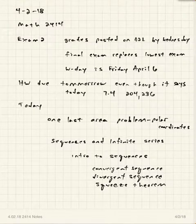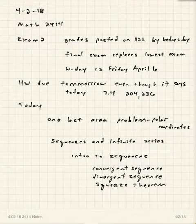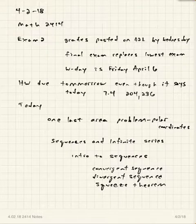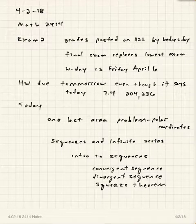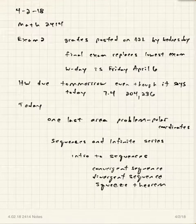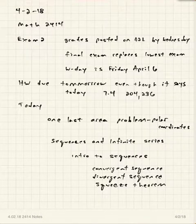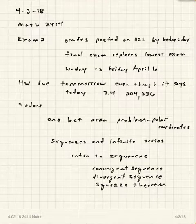A couple of reminders as far as grades go. Remember that the final exam replaces the lowest exam grade. So if you've taken both exams and you have a decent grade on one test but a not-so-good grade on another, the final exam replacing the lowest grade could be of benefit to some of you. Also remember that the W day, the last day to get a W in a course, is this Friday, April the 6th. If you're enrolled in a class after April the 6th, your grade is what your grade is — there's no chance of getting a W.